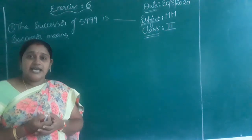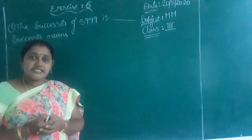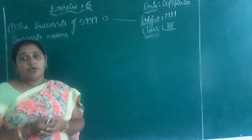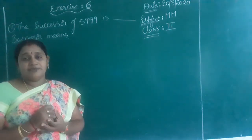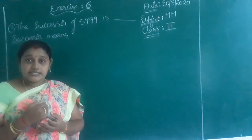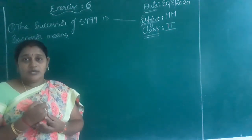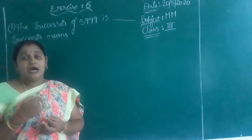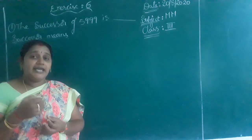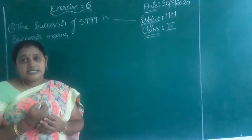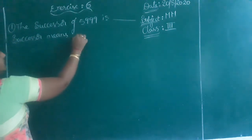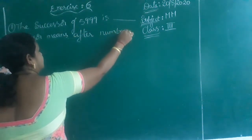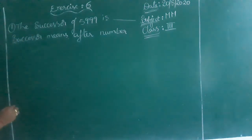For example, what is the successor of 4? After 4 you will get 5. What is the successor of 10? You will say 11. What is the successor of 15? You will say 16. So successor means the after number. How you will get the after number? By adding 1 to the given number. Successor means after number.